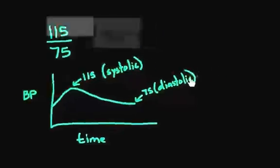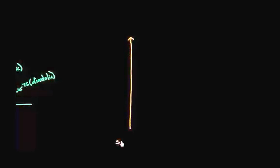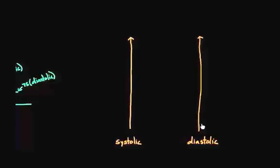Everyone has a different blood pressure, so let's organize blood pressures into groups and figure out what group goes where. To do that, I'm going to draw a couple of number lines. I'll do my systolic blood pressure on one side and the diastolic on the other side, and put them next to each other.